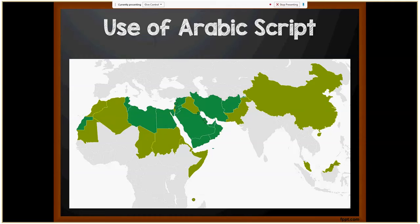Now let's talk about the use of Arabic script. The dark green countries on this map represent those where Arabic is the official language. Lighter green represents countries where Arabic is one of several official languages or a language of everyday use. These include countries across the Middle East, Central Asia, South Asia — including languages such as Turkish, Turkmen, Kurdish, Farsi, Baluchi, Dari, Pashto, Uzbek, Urdu, Punjabi, Sindhi, Kashmiri — as well as Southeast Asia and parts of Africa.